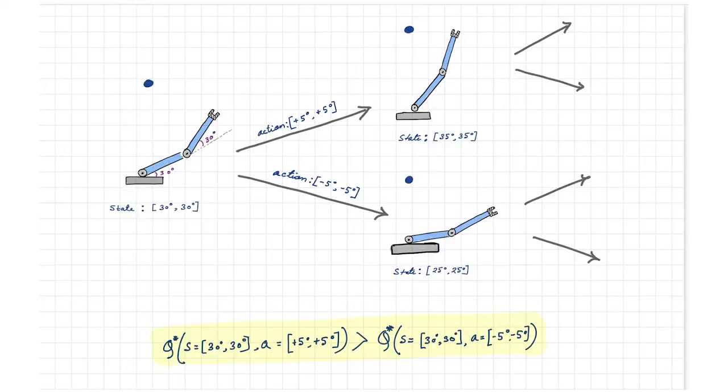Let's develop a quick intuition about Q-learning. Suppose this arm has to train itself to reach the target location with minimum number of steps. Let's assume that the arm receives a reward based on its distance from the goal. The smaller the distance, the higher the reward.